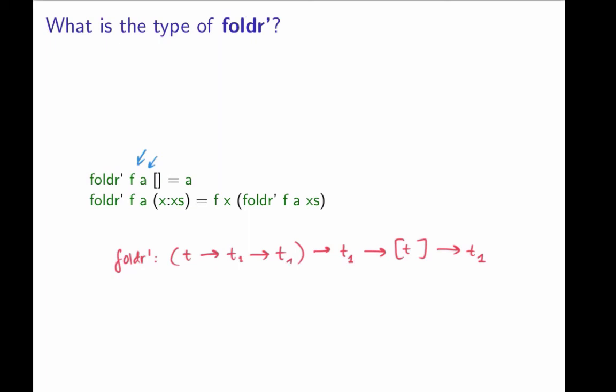So that's the type of foldr prime. Let's see what Haskell would like to say about that.